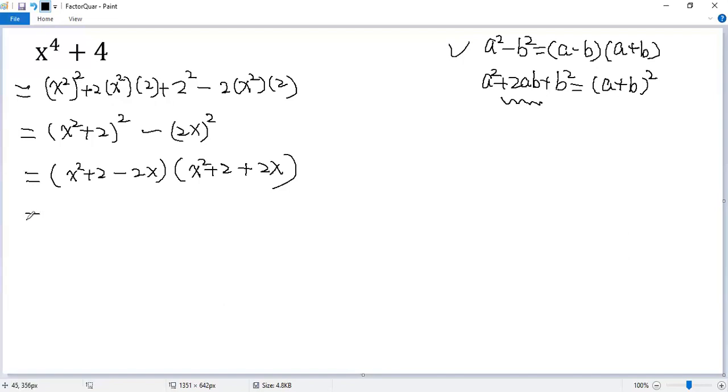We can write it a little bit better. So we get x squared minus 2x plus 2 times x squared plus 2x plus 2. That is the final answer.